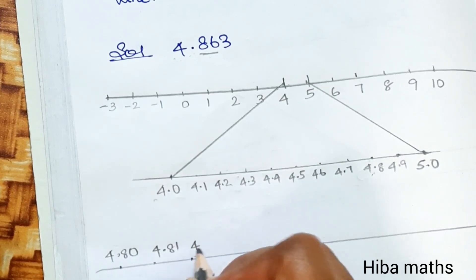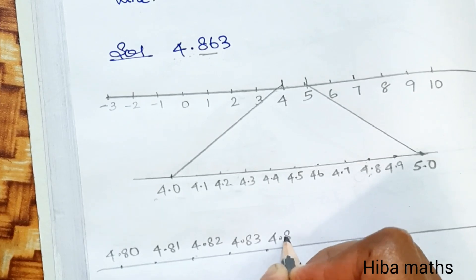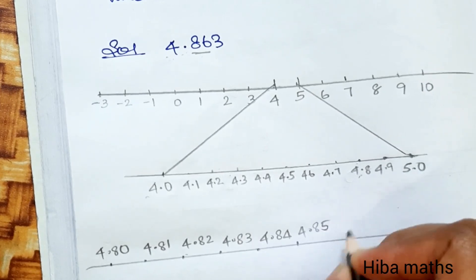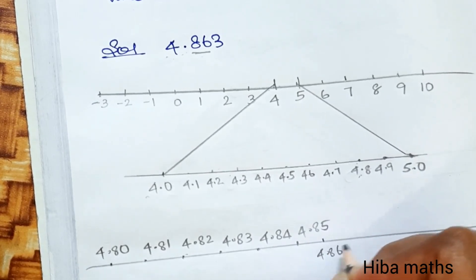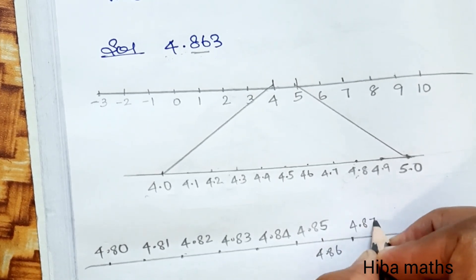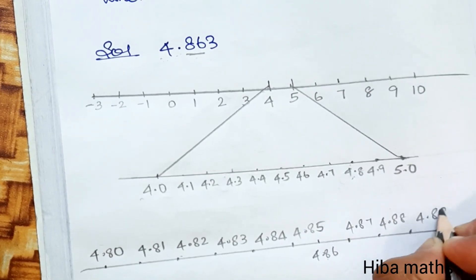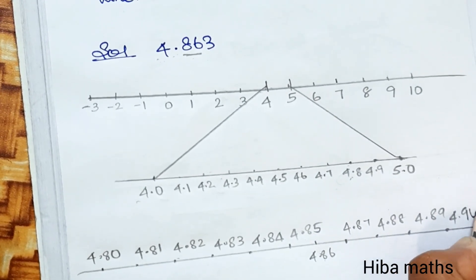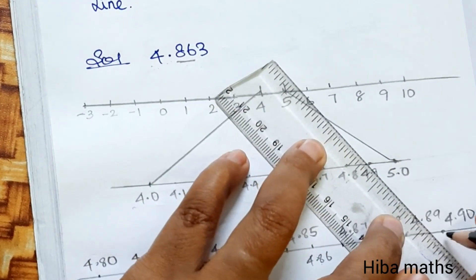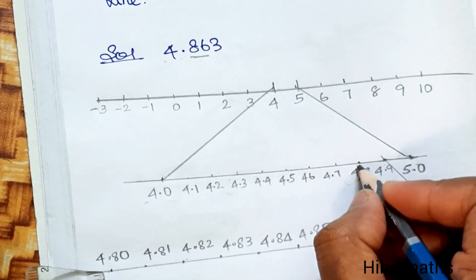Next, we divide between 4.8 and 4.9 into 10 equal parts: 4.81, 4.82, 4.83, 4.84, 4.85, 4.86, 4.87, 4.88, 4.89, 4.90. So, 4.86 is located between 4.8 and 4.9.